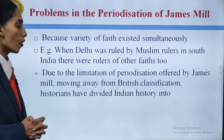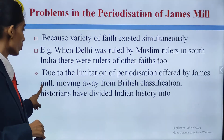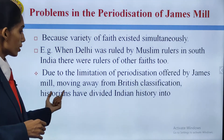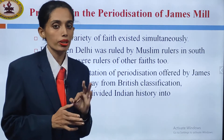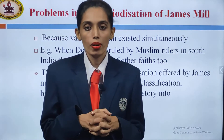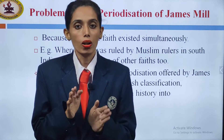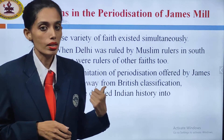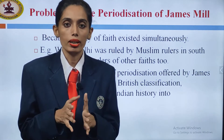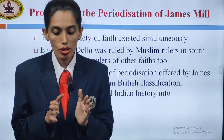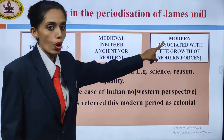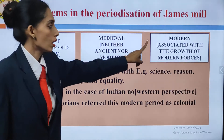Due to the limitations of periodization offered by James Mill, moving away from the British classification, historians have divided Indian history into three periods. James Mill had offered Hindu, Muslim and British — but according to this, it was not justified. Our Indian historians divided according to their understanding into ancient, medieval, and modern.